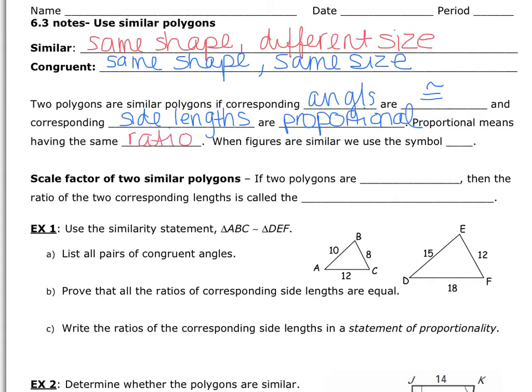When figures are similar, we use the tilde symbol, which is a little different than the congruent sign. So similar means the angles are the exact same measure and the sides are proportional. Once you have a ratio that is the same for two figures, we refer to that as the scale factor. If two polygons are similar, the ratio of the two corresponding lengths is called the scale factor, sometimes abbreviated SF.